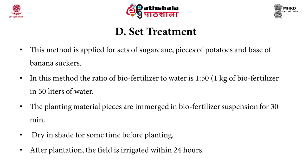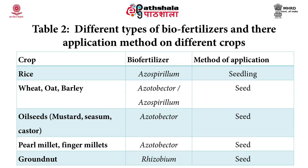Seedling treatment is applied for crops like paddy, onion, and chili. The biofertilizer is mixed with water in a ratio of 1:10, and the seedlings are dipped in the suspension for 30 minutes. The root tips are then transplanted immediately — there is no drying step in seedling treatment. Set treatment is applied for sugarcane pieces, potato sets, and banana suckers, using a biofertilizer-to-water ratio of 1:50. The planting material is immersed for 30 minutes, dried in shade, and the field is irrigated within 24 hours after planting.